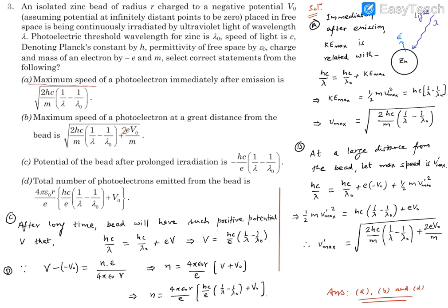Statement A says the maximum speed of the photoelectron immediately after the emission. Immediately after emission, the kinetic energy or maximum kinetic energy related with the photoelectron is given by Einstein's photoelectric equation. HC/lambda is the input energy. HC/lambda naught is the threshold or work function and K max. This is immediately after. So from here we can find K max, which is going to be half M V max squared equals HC/lambda minus HC/lambda naught. From here V max comes out to be square root of 2HC/M times (1/lambda minus 1/lambda naught). So this is the maximum velocity achieved by the photoelectrons immediately after emission. That's correct.